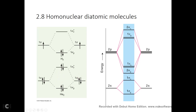Now let's look at some other homonuclear diatomics — we need more orbitals. For lithium-2, we need the 2s orbitals. For beryllium-2, again we need the 2s orbitals. For boron, carbon, nitrogen, oxygen, fluorine, and neon, we need to look at the 2p orbitals as well. So first, let's look at the 2s orbitals.